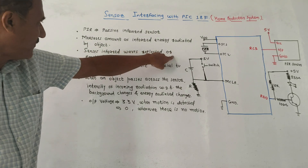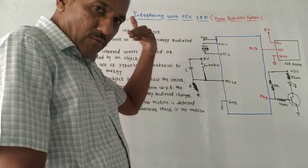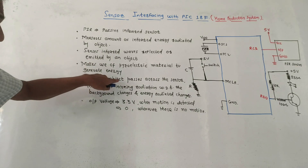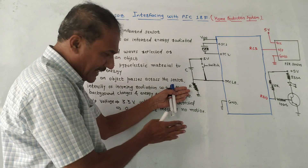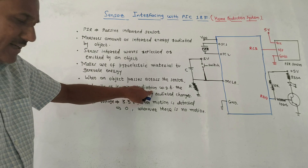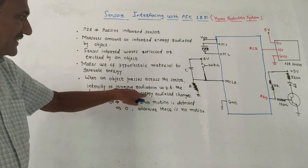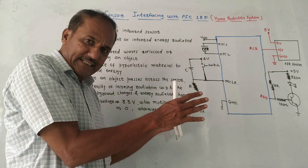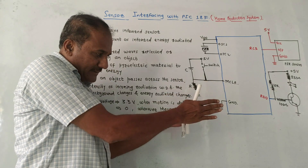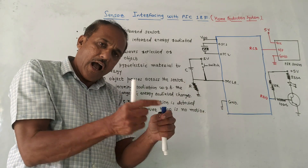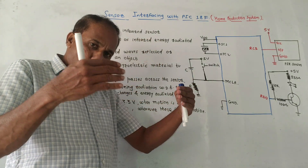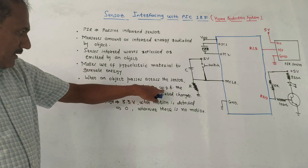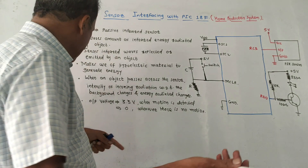It makes use of pyroelectric material, which is one of the materials used to generate energy. When an object passes across the sensor, the intensity of incoming radiation with respect to the background changes, and the energy radiated by the sensor also changes. If any object or human being passes across the sensor, that change is detected and an alarming indication is given.